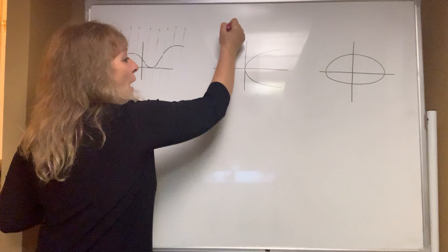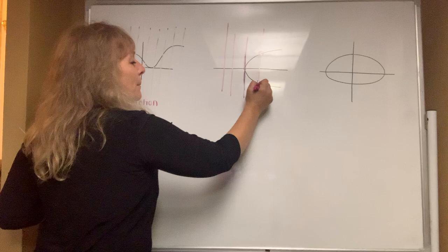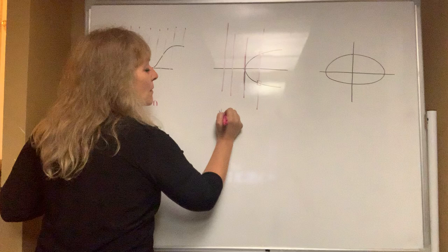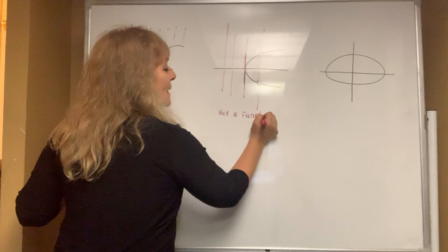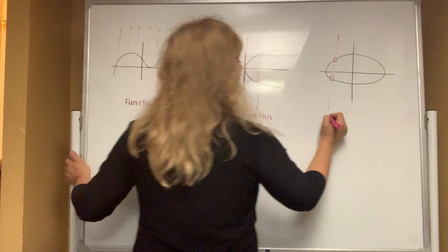It is possible that a raindrop — a vertical line — does not hit the function, or it hits it exactly once. But the moment a raindrop hits it more than one time, it is not a function because it fails the vertical line test. Clearly you can see in the last picture, this is not a function because there exists a vertical line that intersects the graph more than once.